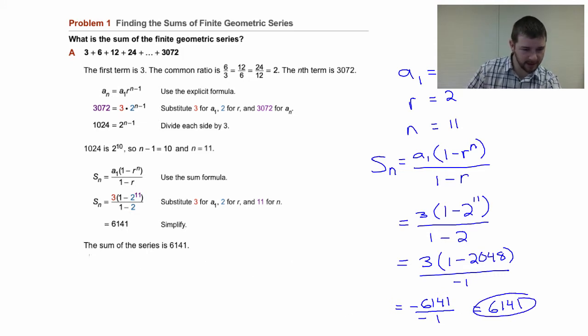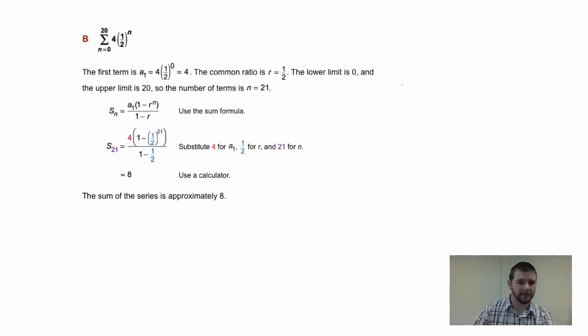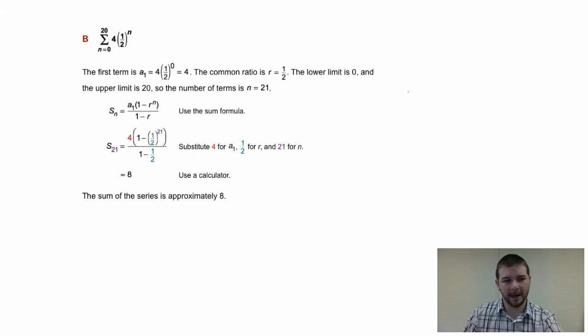In part b, we're asked to do the same thing, find the sum of the series written in summation notation, otherwise known as sigma notation. We will still need to know the same three components to use our sum formula. We'll need a sub 1, we will need our common ratio, and we will need our n value. Thankfully, we can extract those pretty easily from our summation notation.